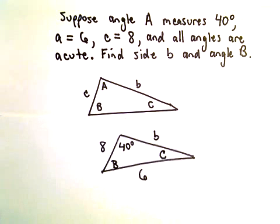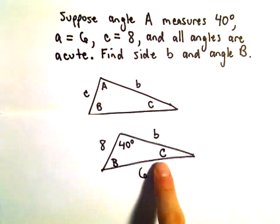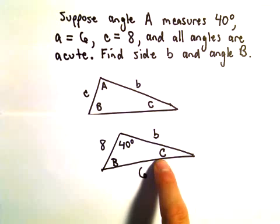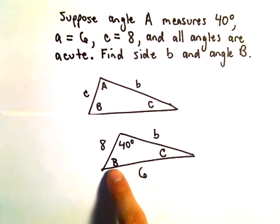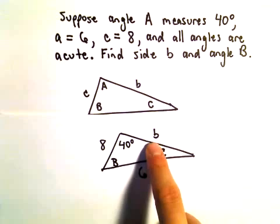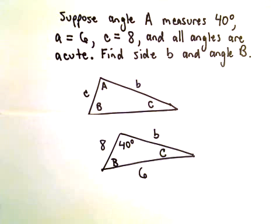But what I'm going to do is use the law of sines to figure out angle C. From that, since we know all the angles add up to 180, I'll be able to find the value for angle B. And then again, I'll be able to use the law of sines and figure out the value for little b.